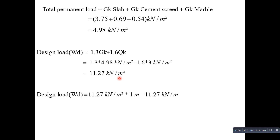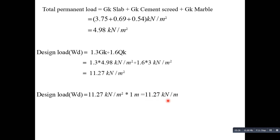For the strip method, we use a strip of 1 meter width. Multiplying the area load by 1 meter: 11.27 kN/m² × 1 m = 11.27 kN/m as the design line load on the strip.